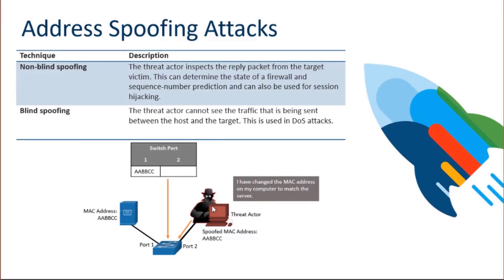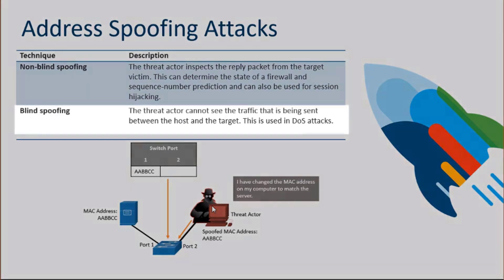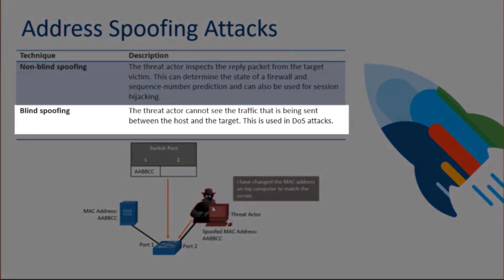Lastly, we have address spoofing attacks themselves. This is where we commonly see non-blind and blind spoofing. Blind spoofing is the easiest to talk about — this is where a threat actor can't see the traffic being sent between a host device and the target. In blind spoofing, the threat actor tries to manipulate and utilize MAC addresses for their own DoS purposes.